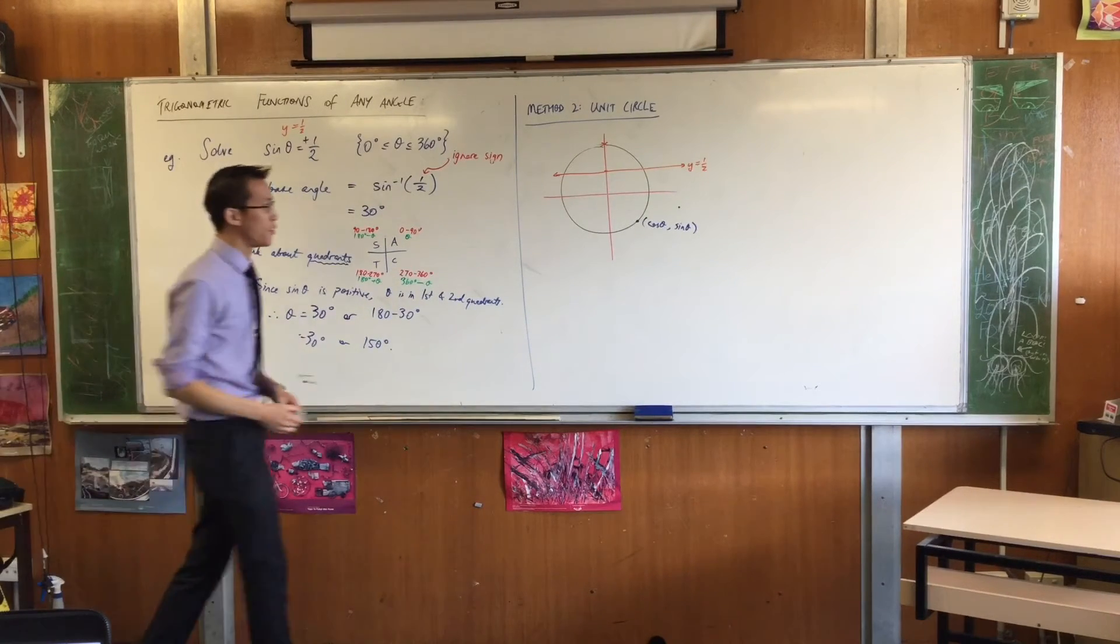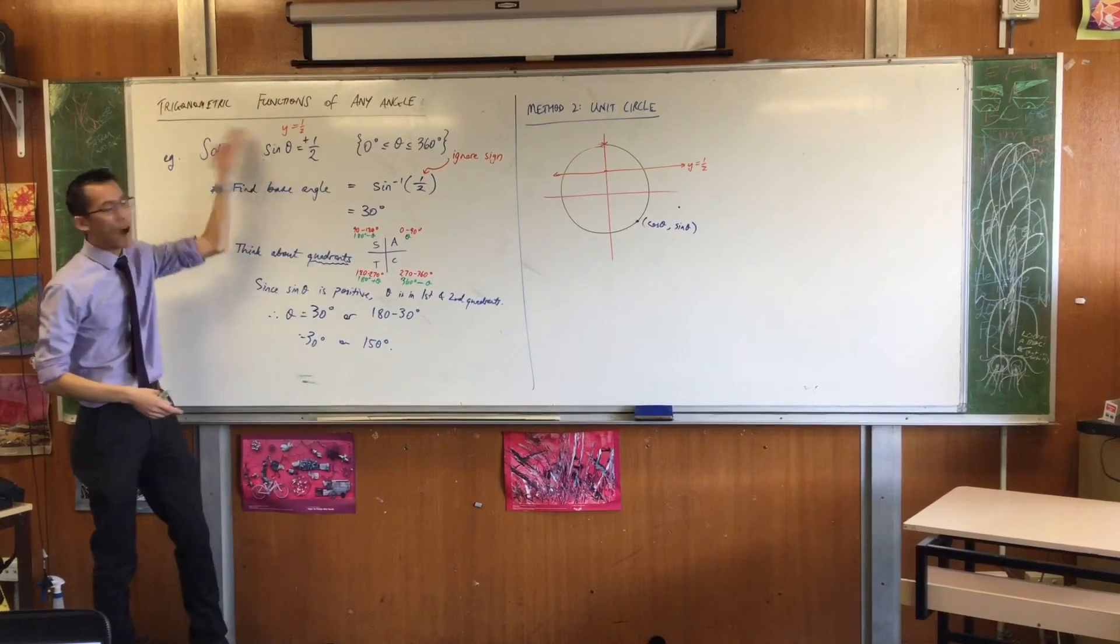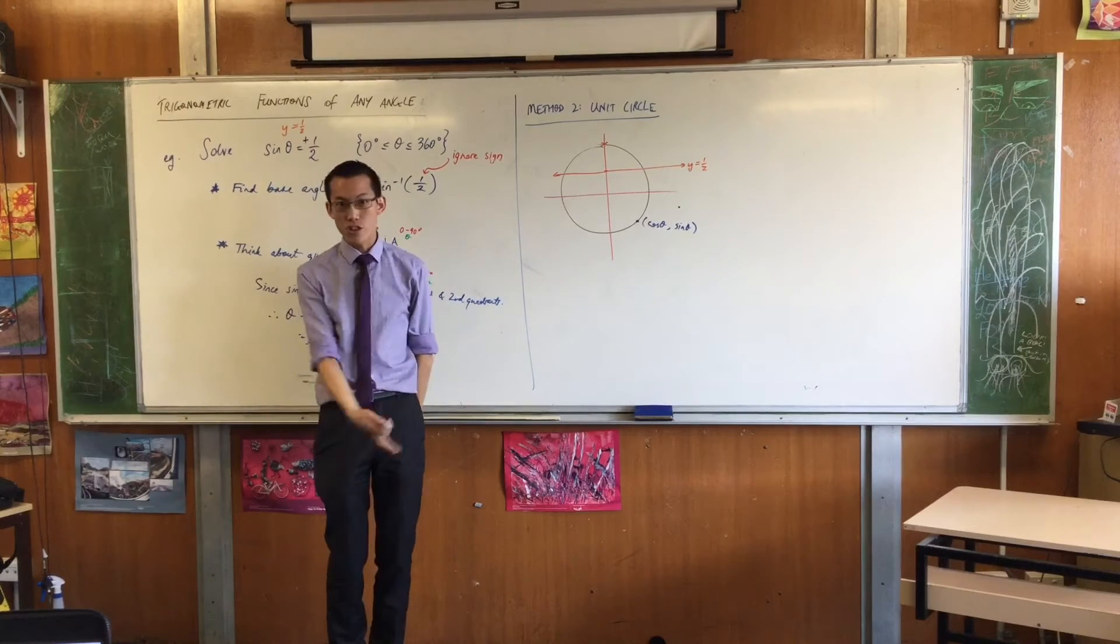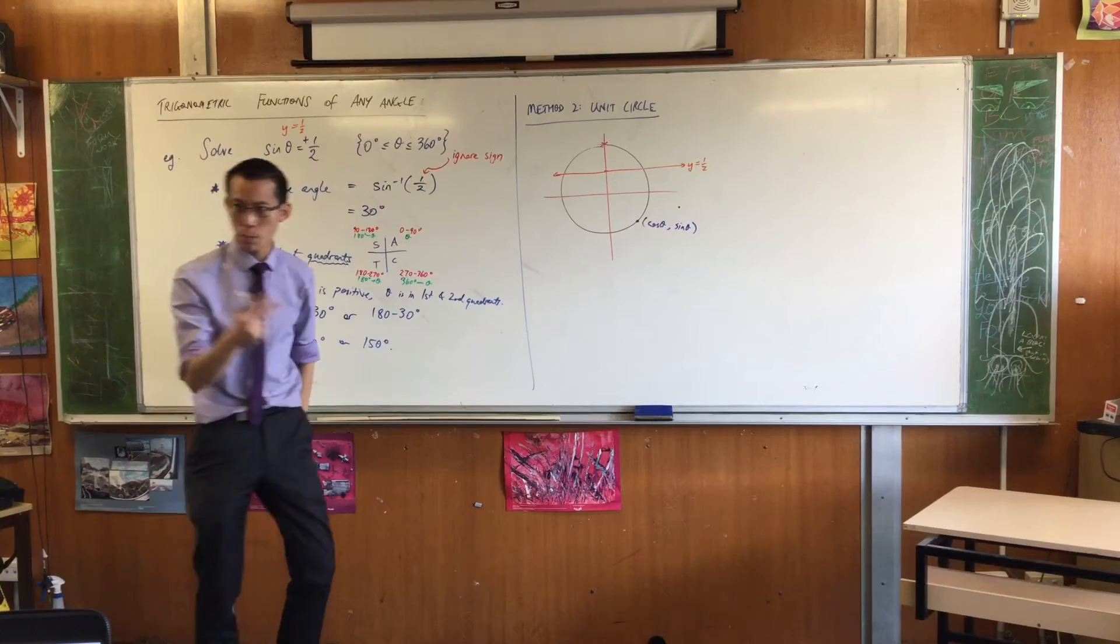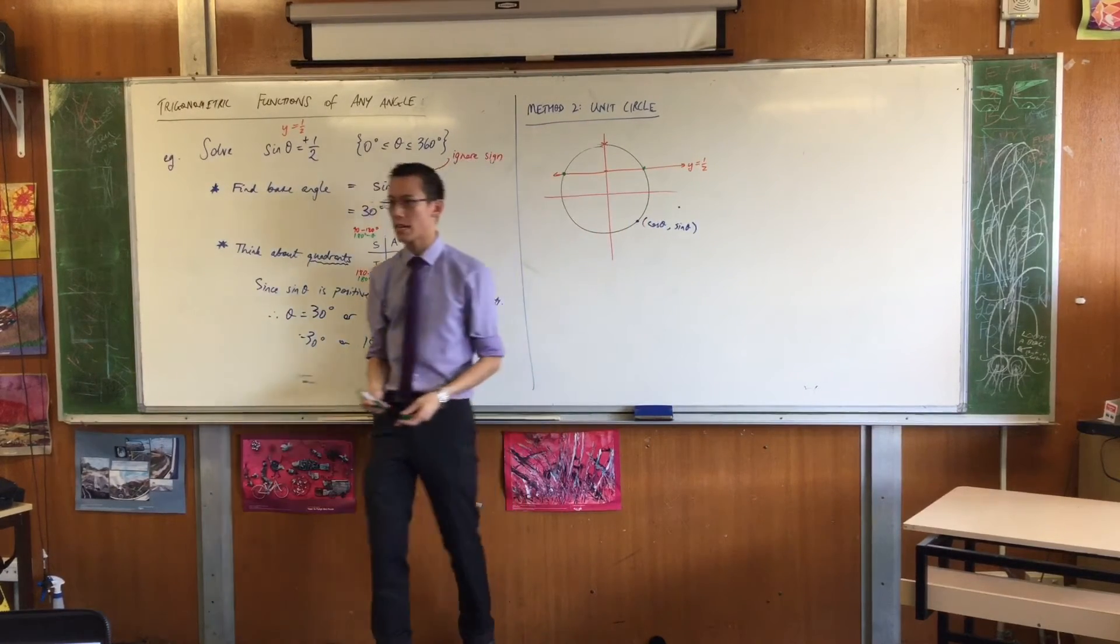Now, what I'm searching for is, what this means is, where does y equals a half intersect with the unit circle? Okay? And you can see it plain as day, there are two spots. Do you see that? Two spots on the unit circle. Here and here. Do you agree?